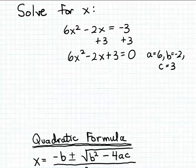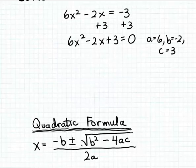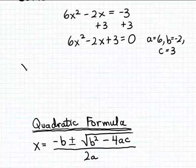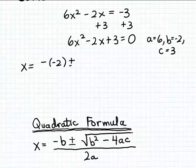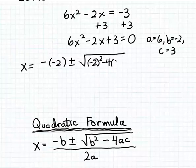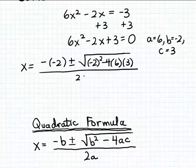We're going to substitute those into the quadratic formula and simplify to get the solutions to the equation. According to the quadratic formula, the solutions are x equals minus b — so that's minus of negative 2 — plus or minus the square root of b squared, which is negative 2 squared, minus 4 times a (which is 6) times c (which is 3), all divided by 2 times 6.